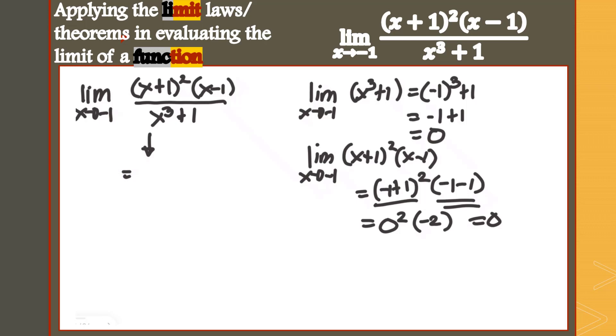Our numerator, we can separate x plus 1, x plus 1, x minus 1. Our denominator would be x³ plus 1, but it's still 0 over 0 because when you substitute negative 1, that's just 0 still.